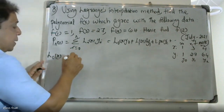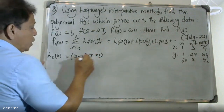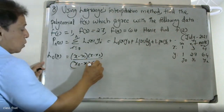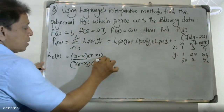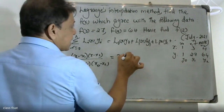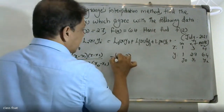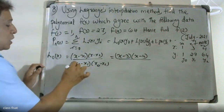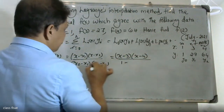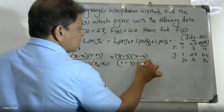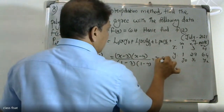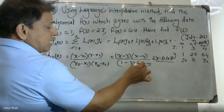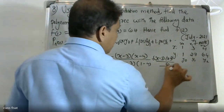For L0(x), the numerator is (x minus x1)(x minus x2) = (x-3)(x-4). The denominator is (x0 minus x1)(x0 minus x2) = (1-3)(1-4) = (-2)(-3) = 6. So L0(x) = (x-3)(x-4)/6.